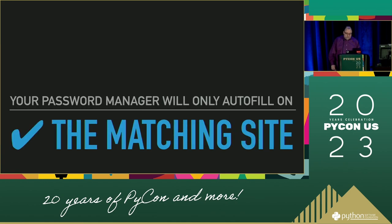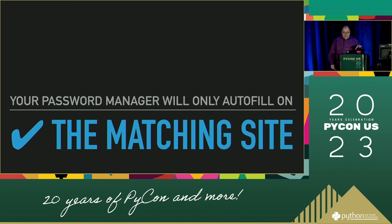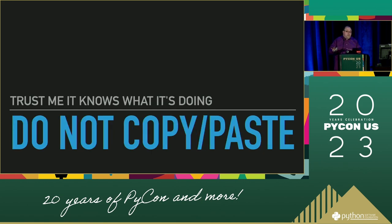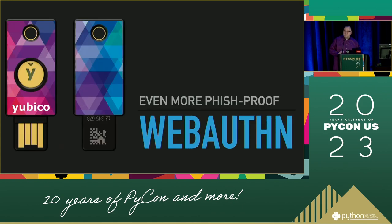If you ever find yourself in Jetro's situation where the password's not autofilling — which can often happen, as many companies have many different domain names — what you should do is open up the password manager, find the entry for the password in question, and manually type the URL of the correct site you're trying to log into. Do not copy it, as the attacker's URL might be quite convincing. Just type it into the website field by hand, and if it still doesn't match, consider getting some help or friends to look at the mail to make sure it's legit. Even better than a password manager alone is a hard token that uses WebAuthn, which is effectively physically impossible to use on the wrong website.